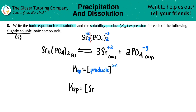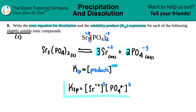So we write: Ksp = [Sr²⁺] multiplied by [PO₄³⁻]. Each concentration is raised to its coefficient: there were three Sr²⁺ ions, so we raise that to the third power, and there were two PO₄³⁻ ions, so we raise that to the second power. The final Ksp expression is Ksp = [Sr²⁺]³[PO₄³⁻]².